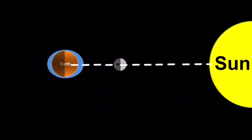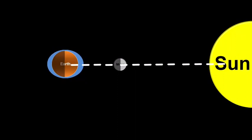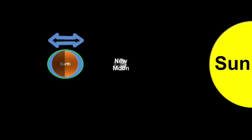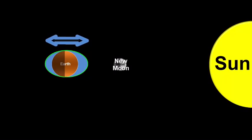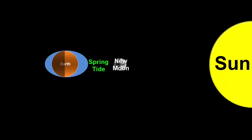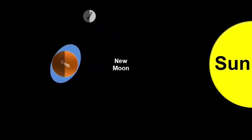During a new moon, when the moon is between the sun and the earth, they are in a straight line. The sun and moon's gravity combine and create higher high tides and lower low tides. This type of tide is called a spring tide.